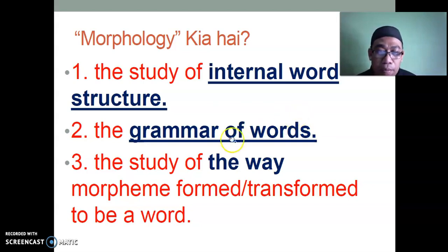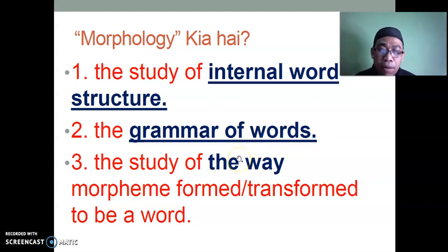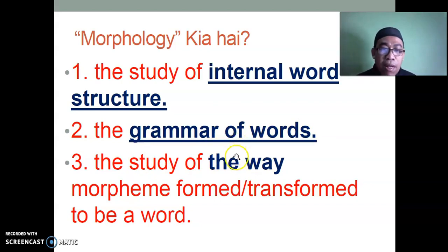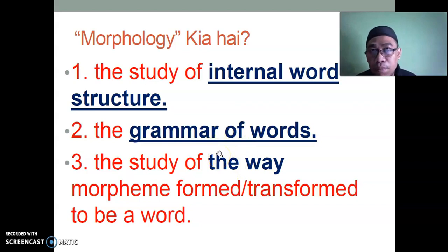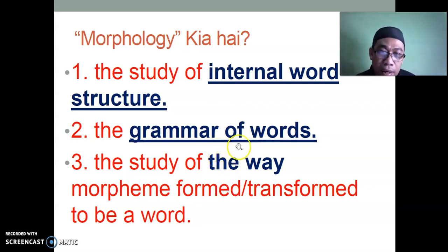The academic definition: the study of the way morphemes form or transform into a word — studying how morphemes change their form into words. The term 'word' itself is too general. For instance, morphemes include free morphemes and bound morphemes, which we will discuss in the following slides.